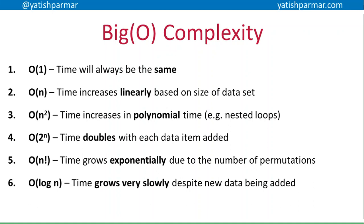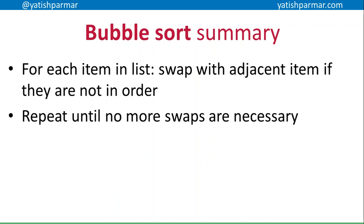The six Big O classifications are: O(1) where time is always the same; O(n) where time grows linearly; polynomial complexity O(n²) where you have nested loops; exponential complexity, often to do with recursion; factorial complexity where time grows exponentially because of the number of permutations. Points four and five start off slow but then just explode. And then we have logarithmic complexity where the time and space requirements plateau very quickly, so adding new data items doesn't really mean more execution time or increasing memory requirements.